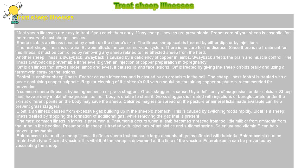Enterotoxemia is another sheep illness. It affects sheep that consume large amounts of grains affected with bacteria. Enterotoxemia can be treated with a type-D toxoid vaccine. It is vital that the sheep is dewormed at the time of the vaccine. Enterotoxemia can be prevented by vaccinating the sheep.